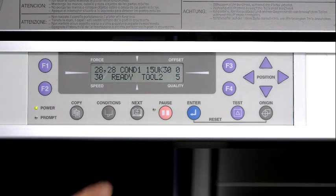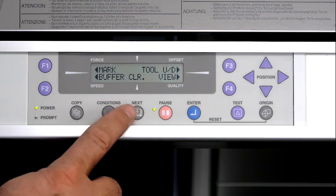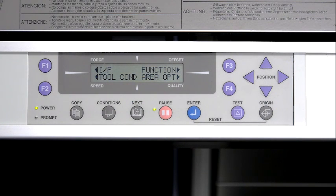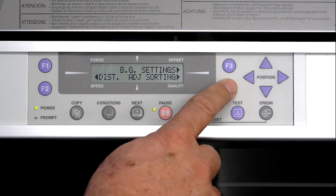To enable sorting, press pause, press next twice or until this menu appears, press F3 for your function, and then press F4 for sorting.